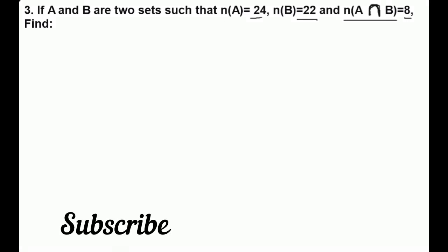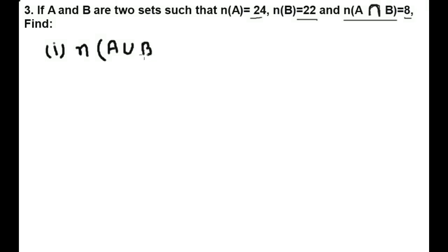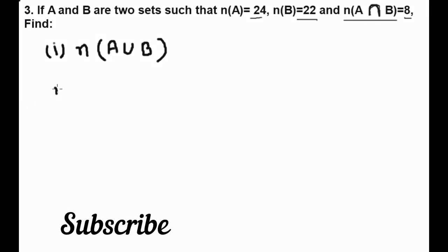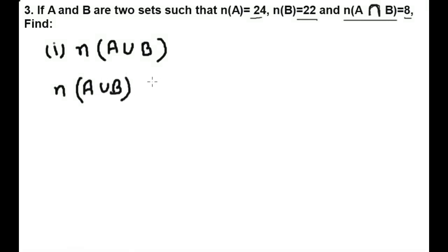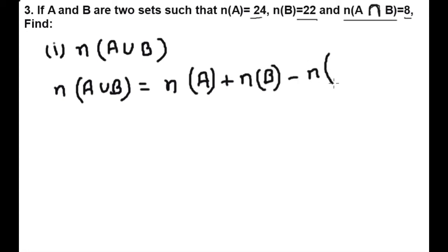Then find: Question 1 is the number of elements in A union B. As we know the formula of A union B, the number of elements in A union B is equal to the number of elements in A plus the number of elements in B minus the number of elements in A intersection B.